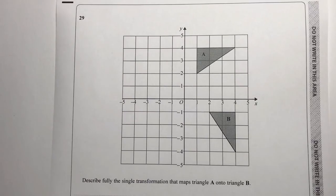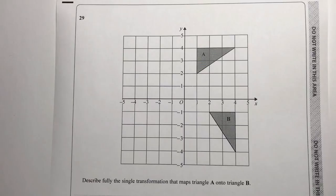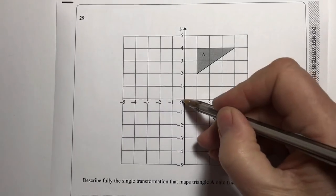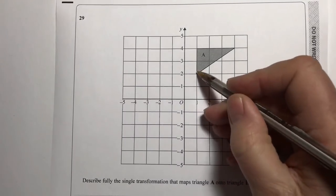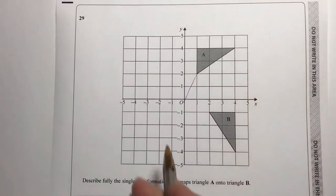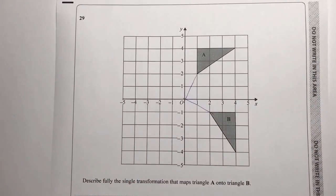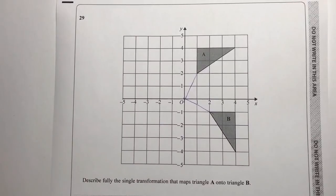Question 29 asks me to describe the single transformation that maps A onto B. It's not an enlargement — I have moved it. What you need to spot is that it's actually been rotated. It is a rotation of 90 degrees about the origin, which is zero zero. That is the answer to the question, but I'll just go over it using a bit of tracing paper.